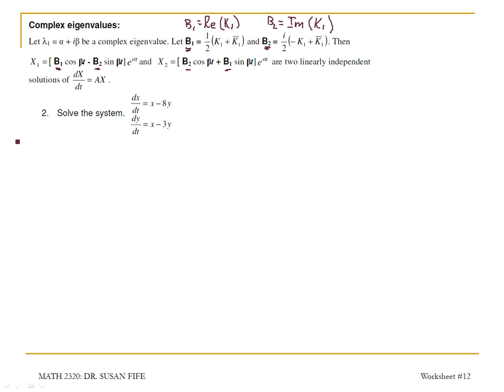So let's go ahead and solve the system. I'll start by writing this system in matrix form. I have x prime is equal to, and my coefficient matrix is 1 negative 8, 1 negative 3 times x. So to find lambda, I'm going to solve the determinant a minus lambda i is equal to 0.